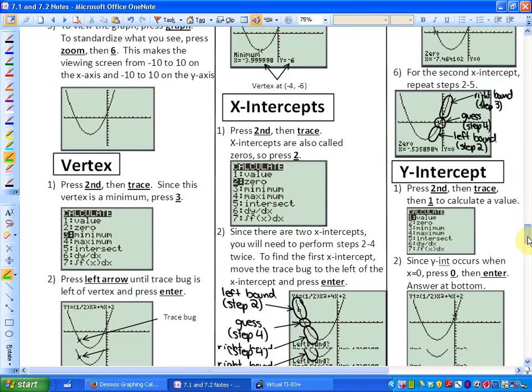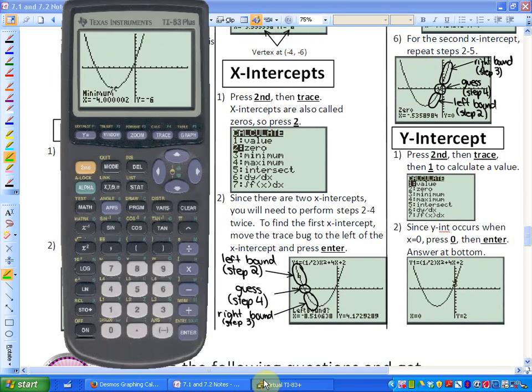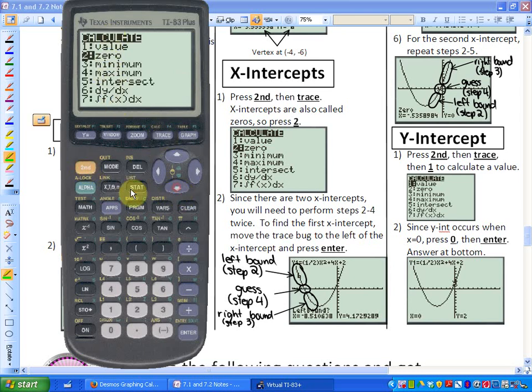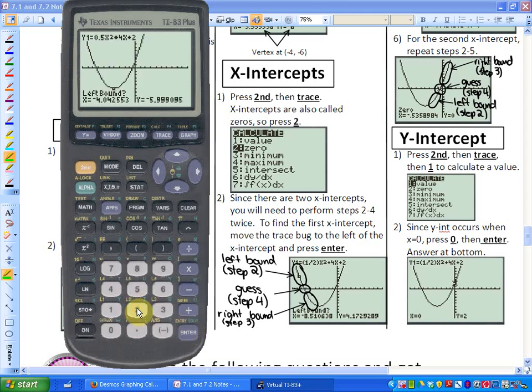Next, is how do we calculate the x-intercepts? Well, another term for x-intercepts, so as you see here, step 1 for x-intercepts is zeros. So, because the output of the y-value is 0, so if I press 2nd and then trace, you go to the calculate menu, and press 2, you will be calculating the zeros. So if I press 2, I'm calculating the zeros, and it's going to ask me the same three questions. However, there are two x-intercepts, so we're going to have to do the following steps twice.